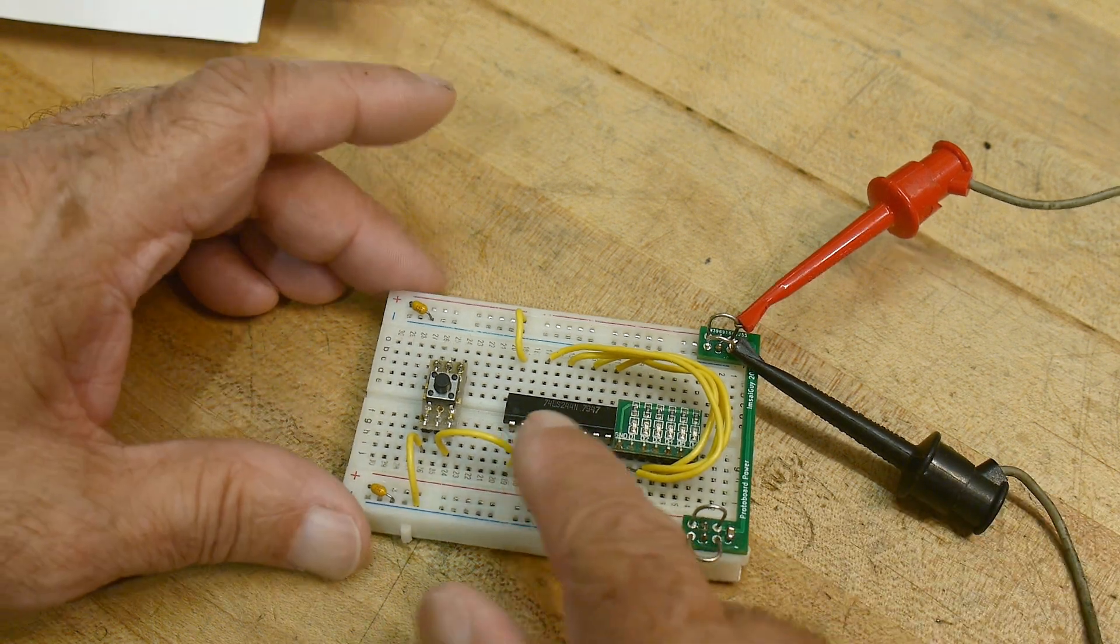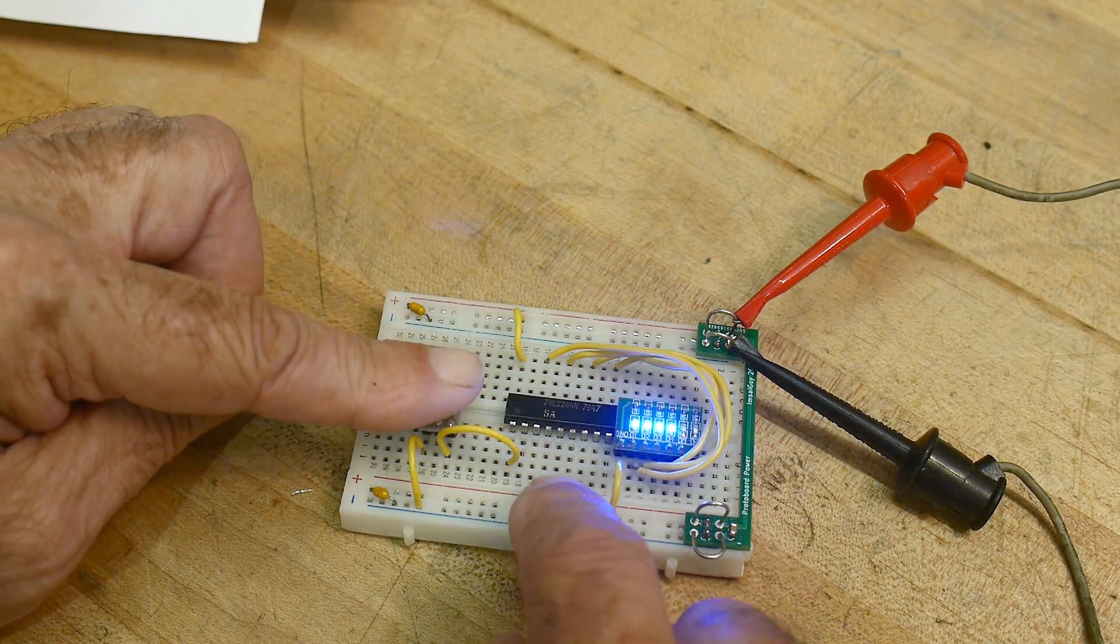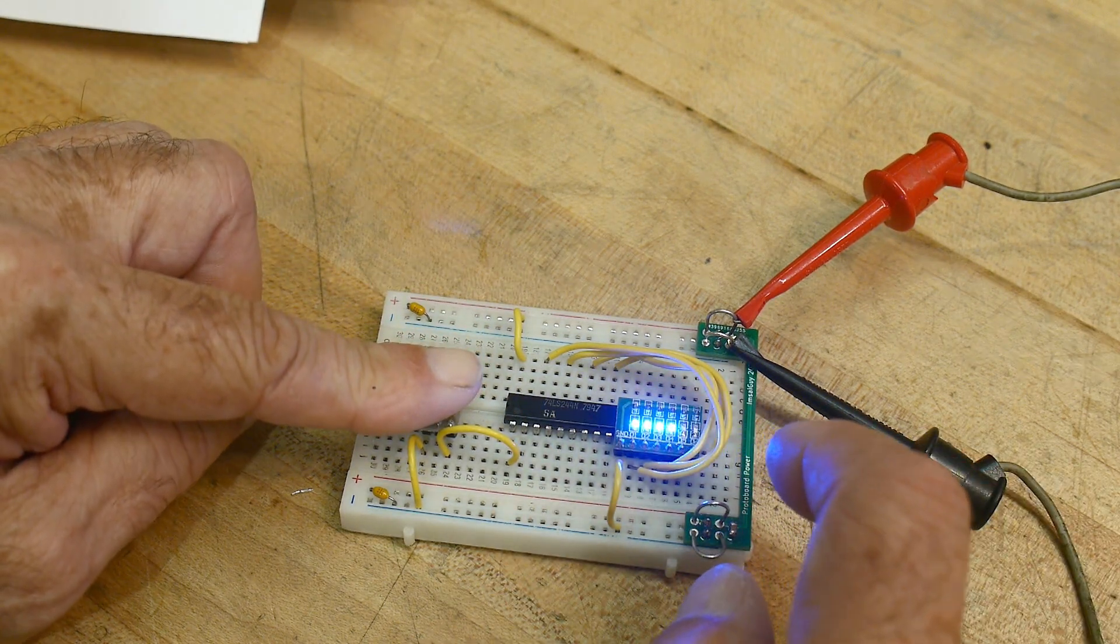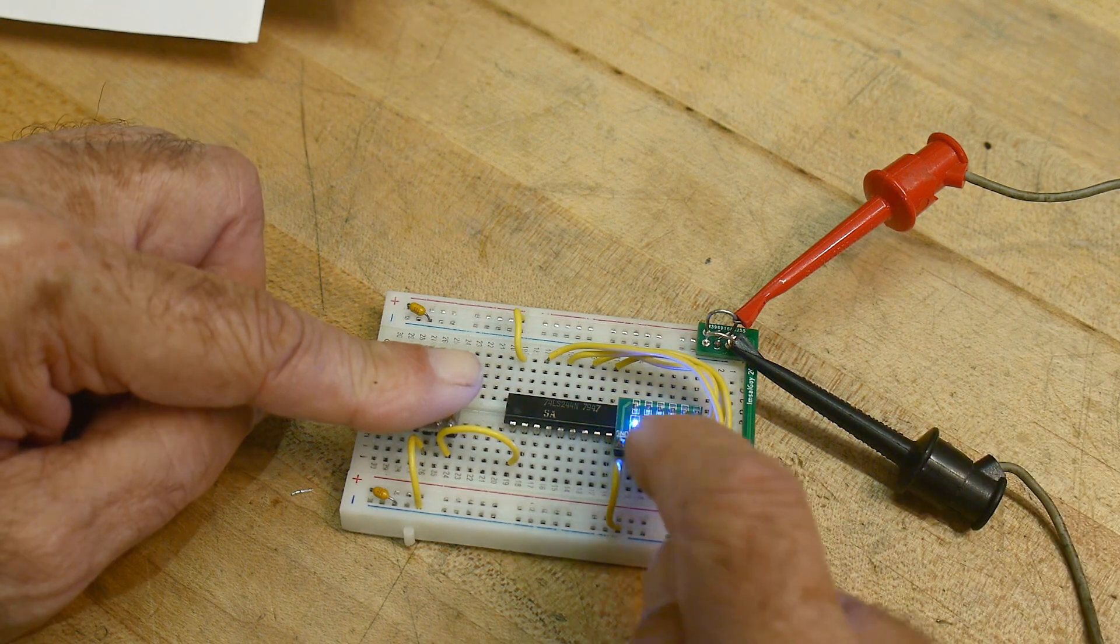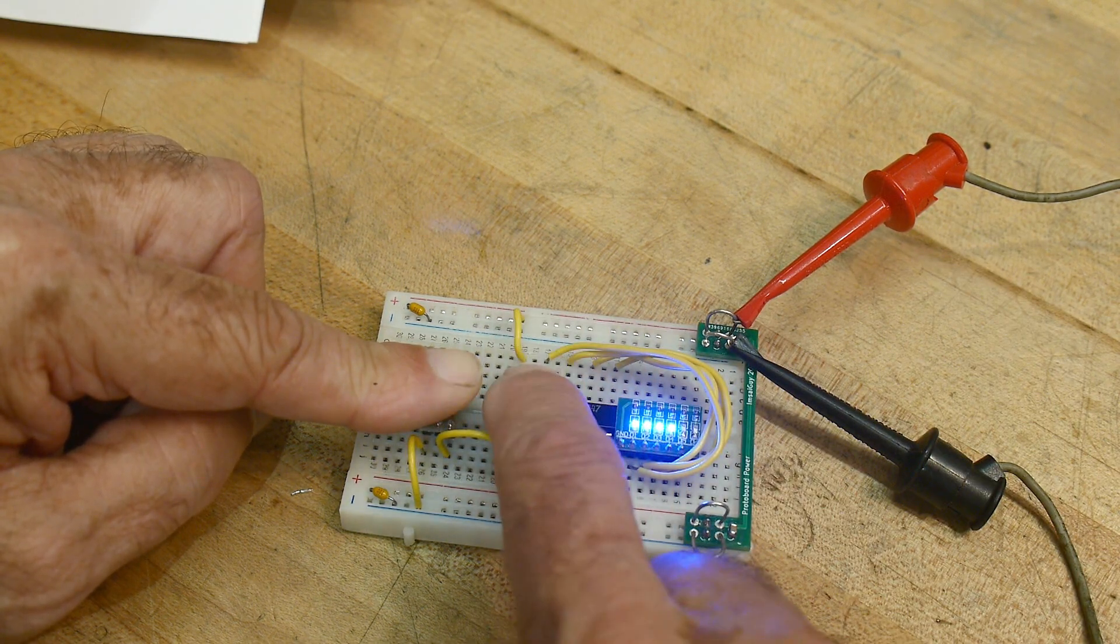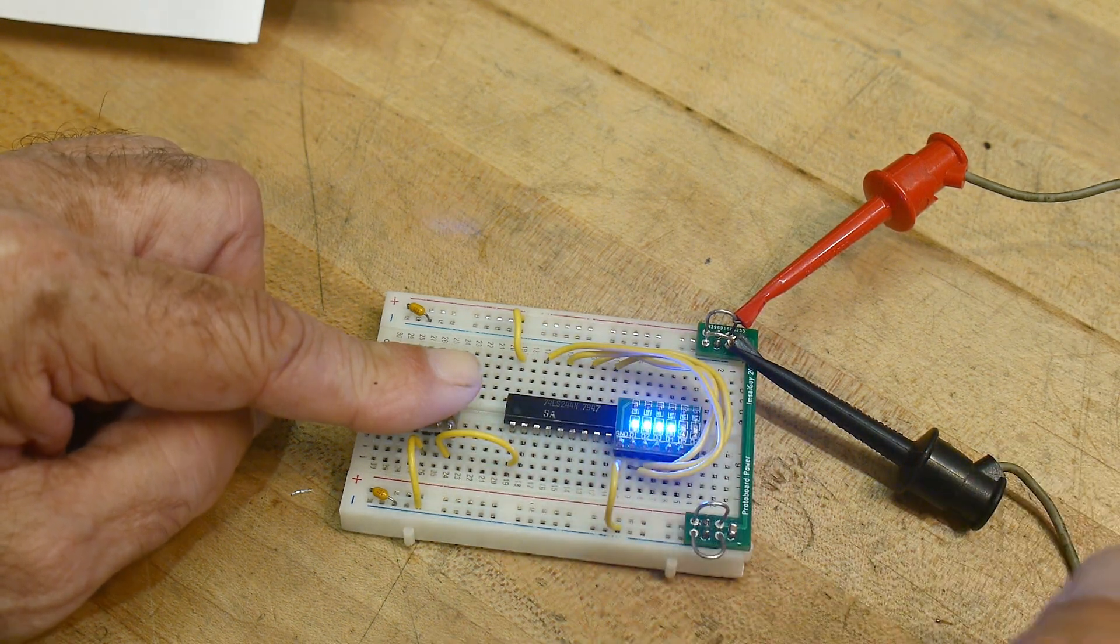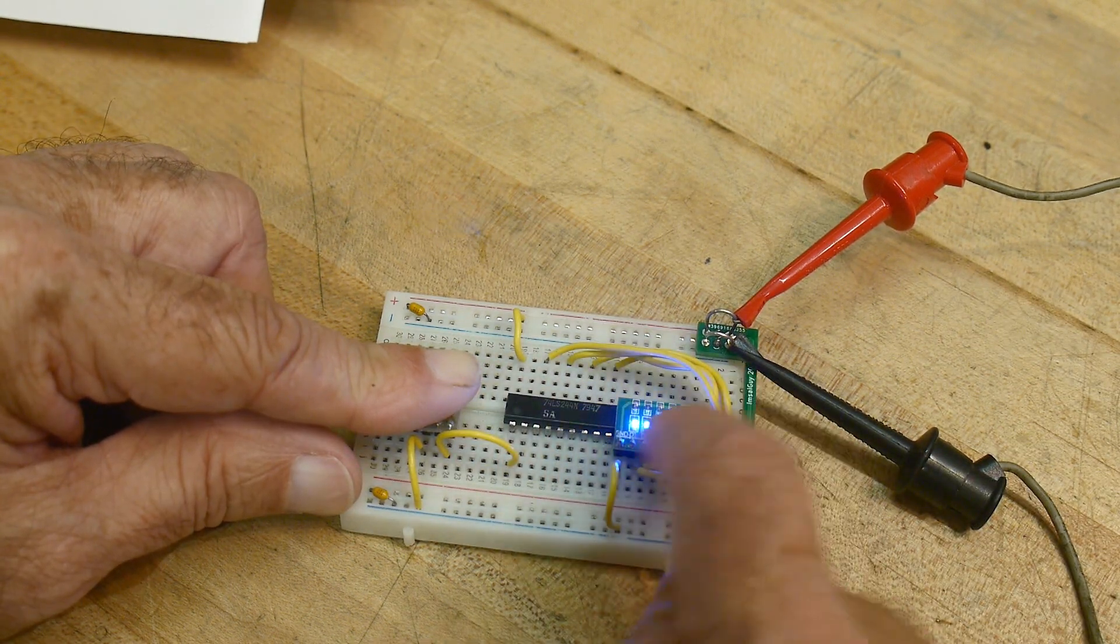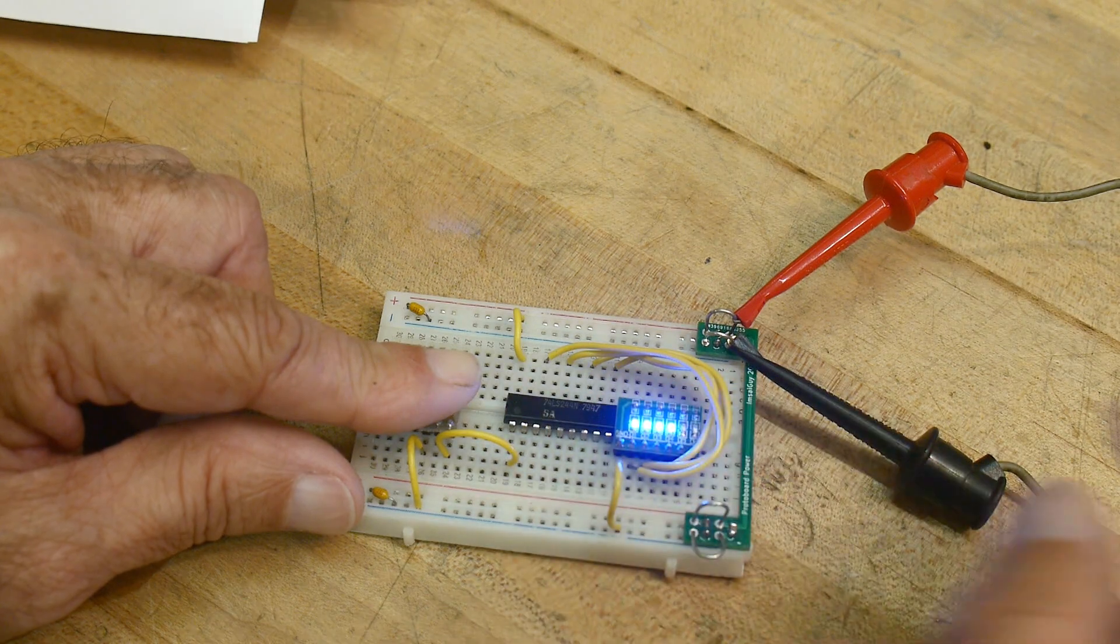Now, if I enable the part, if I do the output enable, you can see that we have ones. I have these wired up so that high true is high true. So, if it's a one, it's lit up. So, we have all of these ones.